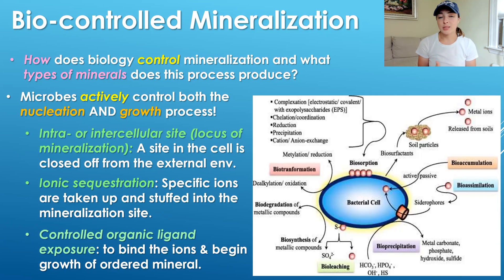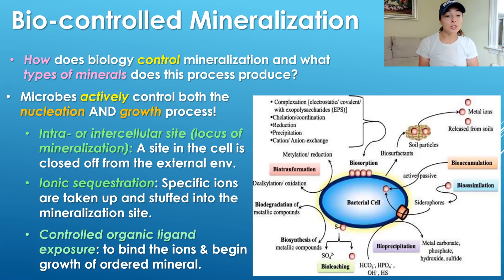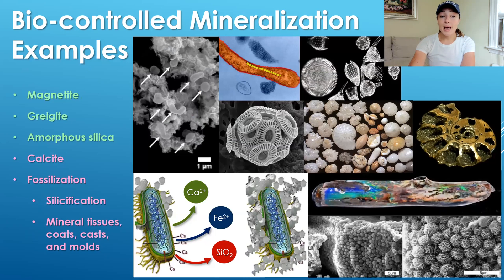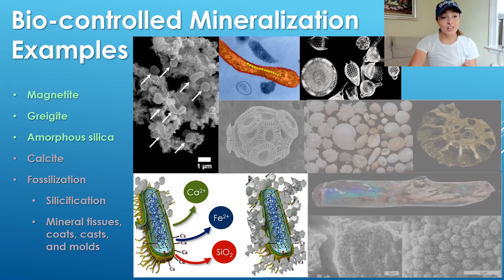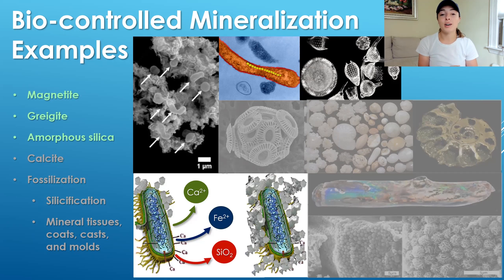This is just a general explanation of the process, and there are many intricate details depending on which mineral and which controlled process we're talking about. Today we'll go over examples: magnetite, greigite, and amorphous silica. We aren't going to touch on calcite or fossilization processes just yet — we'll talk about those in the next video.